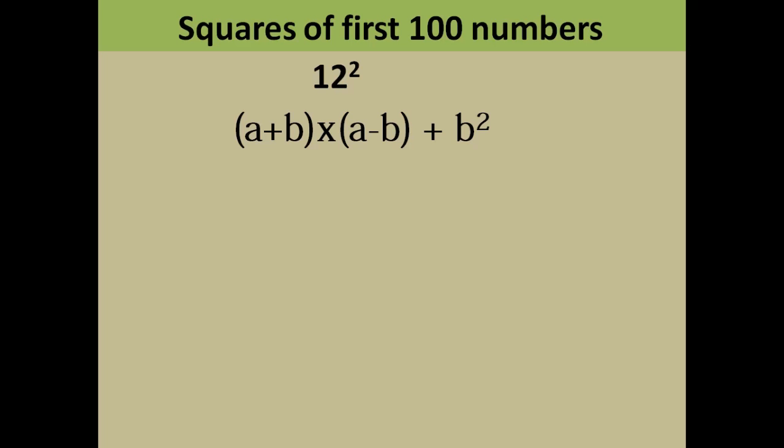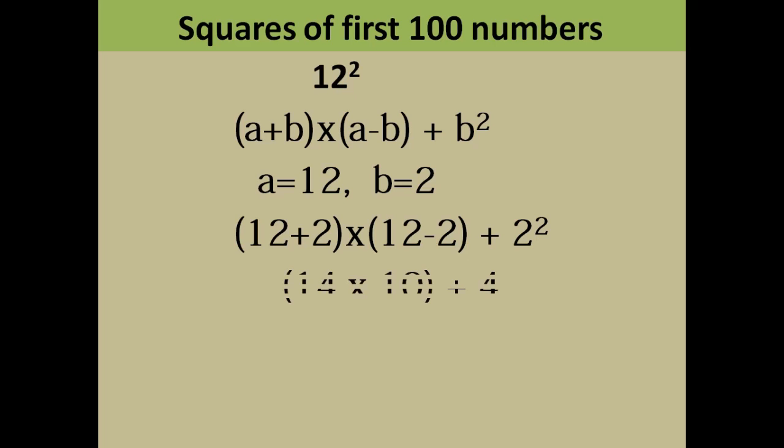In this case, a is your whole complete number, 12, and b is your last digit, 2. So what you will do is: 12 plus 2 into 12 minus 2 plus 2 square. So 12 plus 2 is 14 into 12 minus 2 is 10, equals 140 plus 4 equals 144. So that's the square of 12.